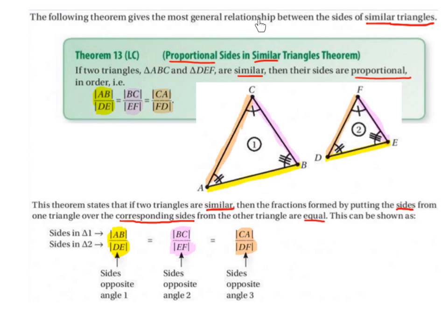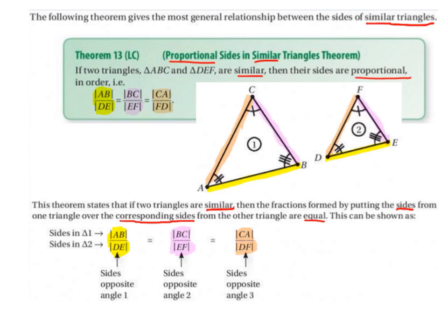The following theorem gives the most general relationship between the sides of similar triangles. Theorem 13: Proportional Sides in Similar Triangles Theorem. If two triangles ABC and DEF are similar, then their sides are proportional in order. Remember that similar triangles have three equal angles, but their side lengths are different — their side lengths are in proportion with each other.